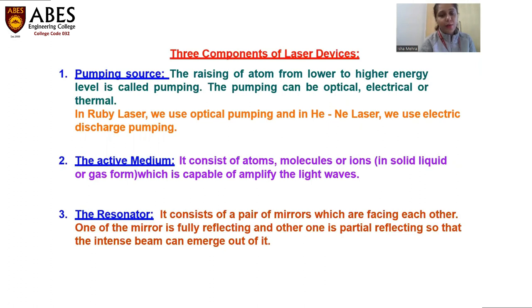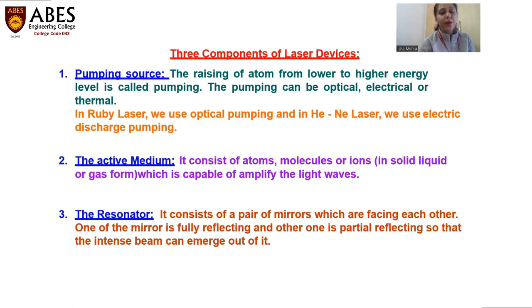So these are the three components of a laser: a pumping source is required, an active medium is required, and an optical resonator — which is nothing but a pair of mirrors — is required.